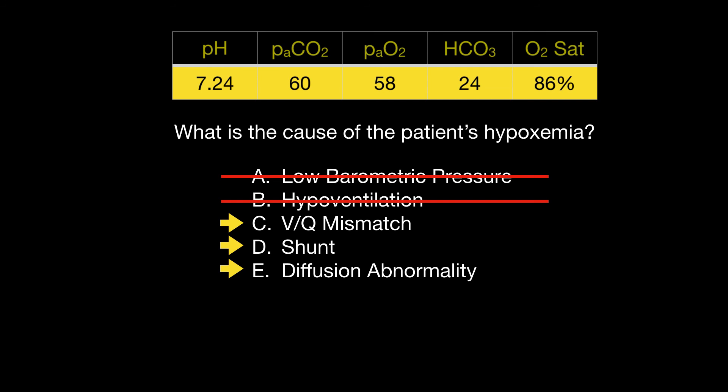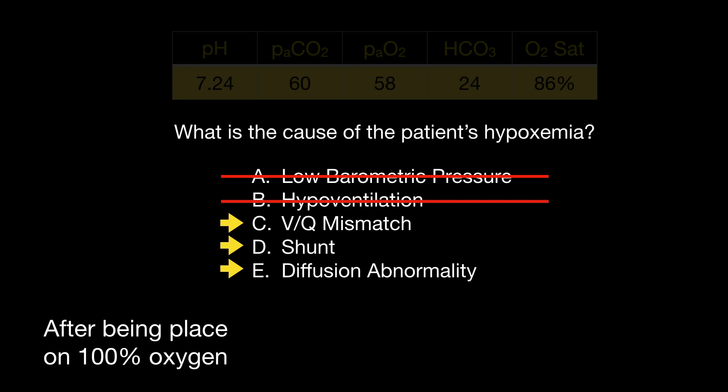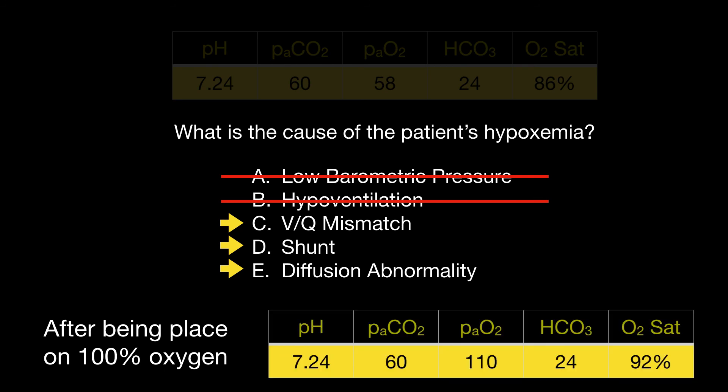The only way to know if it's VQ mismatch versus shunt is to place the patient on more oxygen and see if there's a response. The patient is placed on 100% oxygen — saturations go up to 92% and PaO2 goes up to 110. Because the patient responds to oxygen, we know it's not shunt. It's either VQ mismatch or diffusion abnormality. You'd need more tests to differentiate, which we don't normally do, or just look at the clinical scenario — and most of the time, the problem is VQ mismatch.